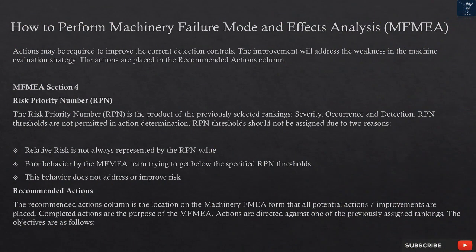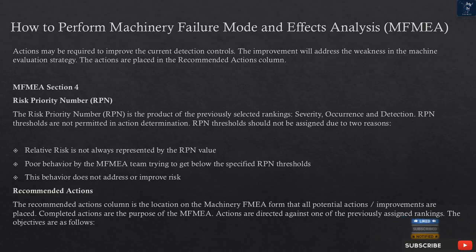Actions may be required to improve the current detection controls; the improvement will address the weakness in the machine evaluation strategy. The actions are placed in the recommended actions column. The Risk Priority Number (RPN) is the product of the previously selected rankings: severity, occurrence, and detection. RPN thresholds are not permitted in action determination. RPN thresholds should not be assigned due to two reasons: relative risk is not always represented by the RPN value, and poor behavior by the MFMEA team trying to get below specified RPN thresholds.